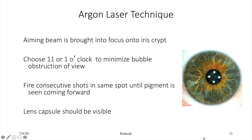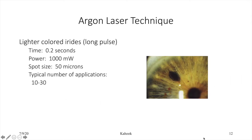For argon or argon/diode laser technique, the aiming beam is brought into focus onto an iris crypt. Choose 11 or 1 o'clock to minimize bubble obstruction — bubbles can then migrate to 12 o'clock. Fire consecutive shots in the same spot until pigment is seen moving forward; the lens capsule should be visible at the end. For lighter irides: 0.2 seconds, 1,000 milliwatts, 50 micron spot size, typically 10–30 spots.